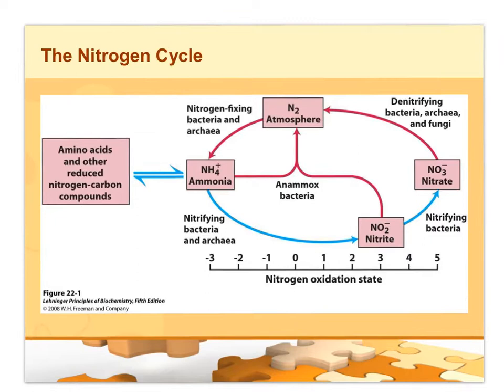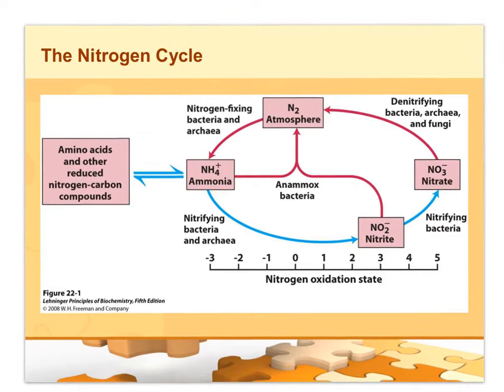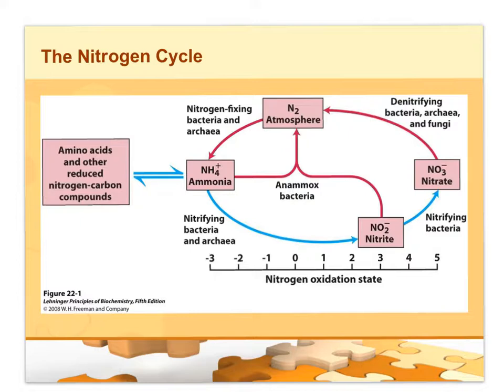Much like carbon can be oxidized and reduced, so can nitrogen. I've already mentioned how we try to get all of the electronic energy we can out of nitrogen. This is the oxidation state of nitrogen: elemental nitrogen has an oxidation state of zero. If it's fully reduced, it's going to be ammonia; if it's fully oxidized, it's going to be nitrate. Nitrite is the in-between. This is the nitrogen cycle.